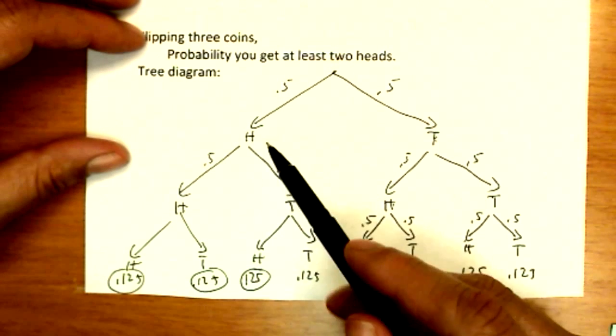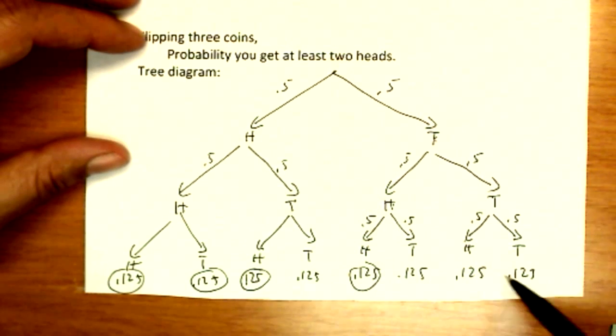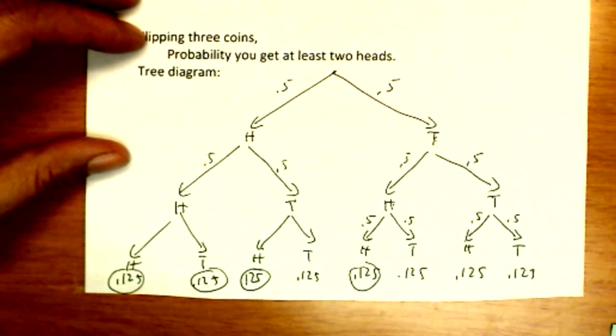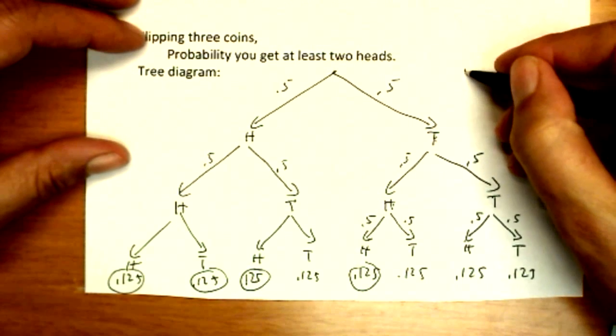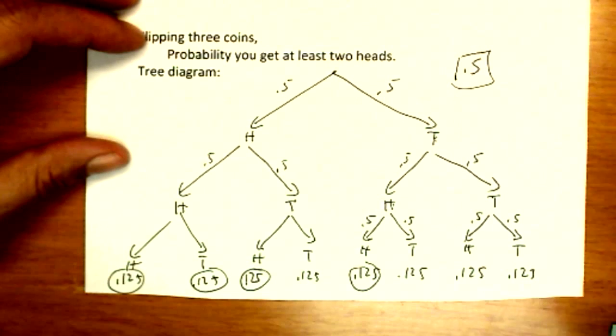These are mutually exclusive events, and they're equally likely outcomes as it turns out, although in our next tree that won't be the case. We can add these probabilities together and I see the answer is 0.5. 50 percent of the time, half the time I'll get at least two heads, two or three heads. And the other half the time I'll get zero or one head. So it makes sense.